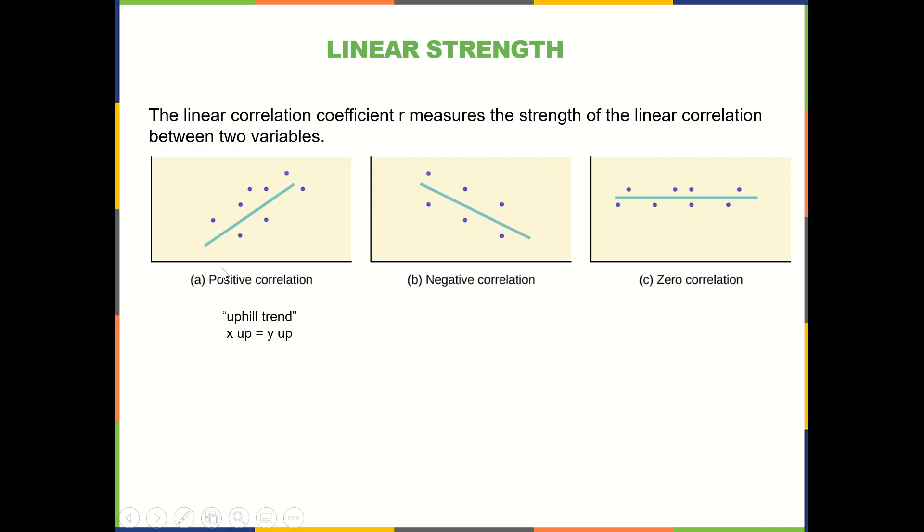And so positive correlation, we can see here, has an uphill trend where as x goes up, so does y. And negative is as x goes up, the y values are going down.